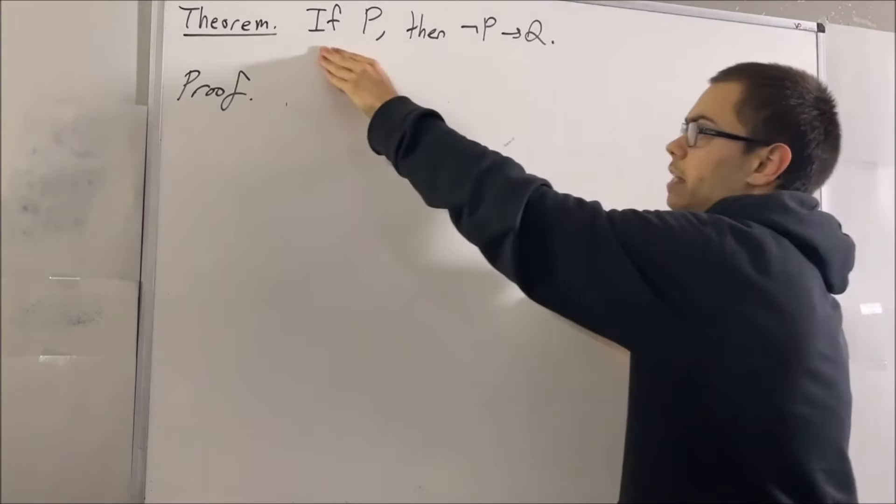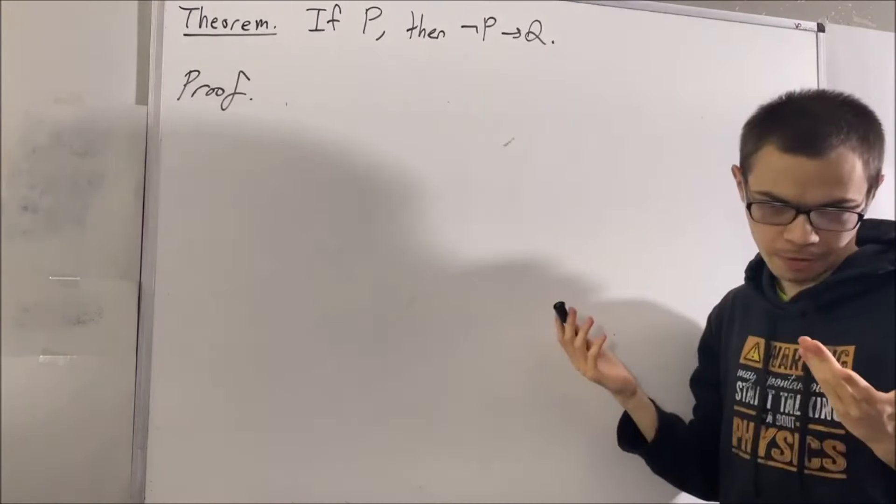So what this is saying is, if we're given that P is true, then in any situation where P is false, we will also have that Q is true.